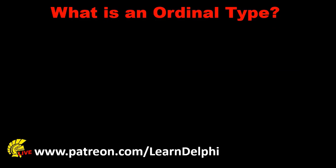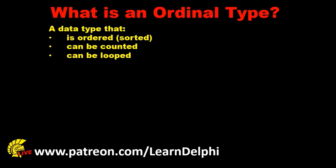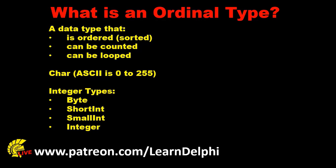In a previous lesson you learned about ordinal types. An ordinal type is a data type that can be sorted and counted, and we can use them as counters for loops. We learned that characters are ordinal types because they have ASCII numbers ranging from 0 to 255. All the integer types — byte, short int, small int, and integer — are also ordinal types, because all numbers follow each other in order and we can use them to do counting and as counters for loops.